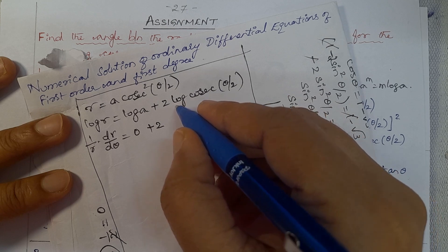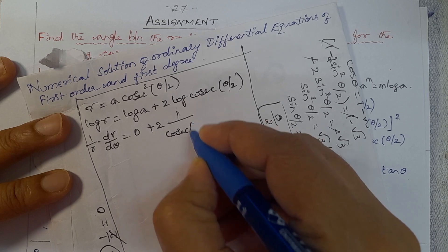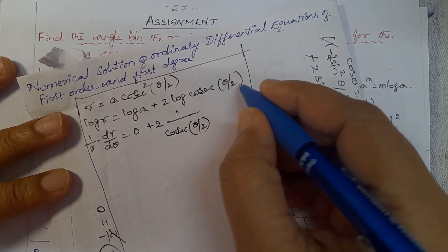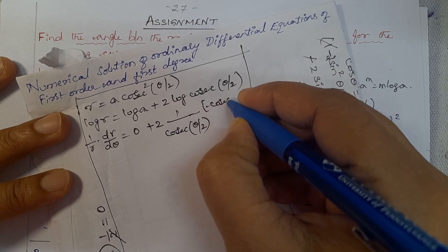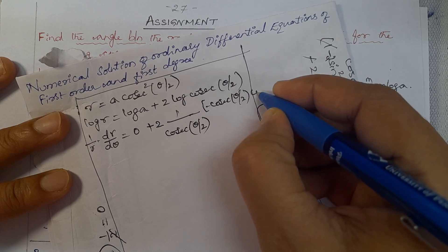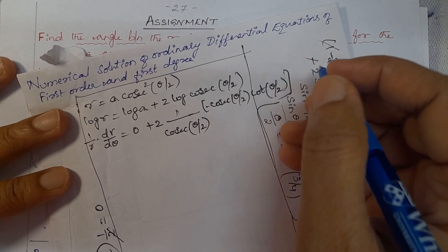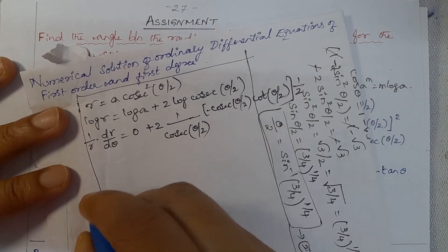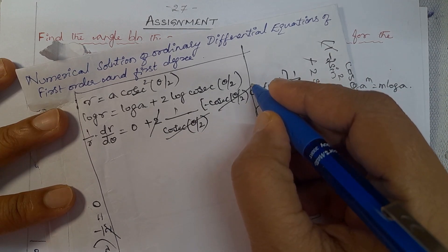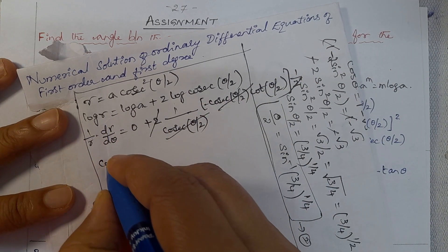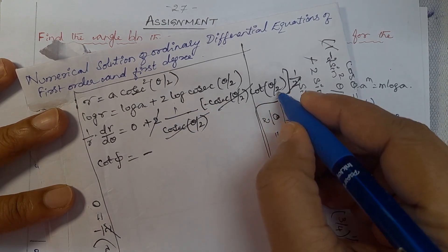Differentiation of log(cosec(θ/2)) is 1/(cosec(θ/2)). Then differentiation of cosec(θ/2) is -cosec(θ/2)·cot(θ/2). Then differentiation of θ/2 is 1/2. The 2 and 2 cancel; cosec(θ/2) and cosec(θ/2) cancel. So (1/R)·(dR/dθ) = cot φ = -cot(θ/2).